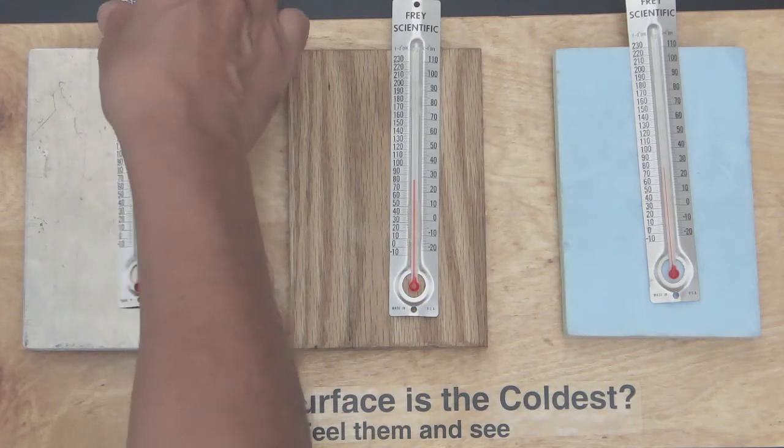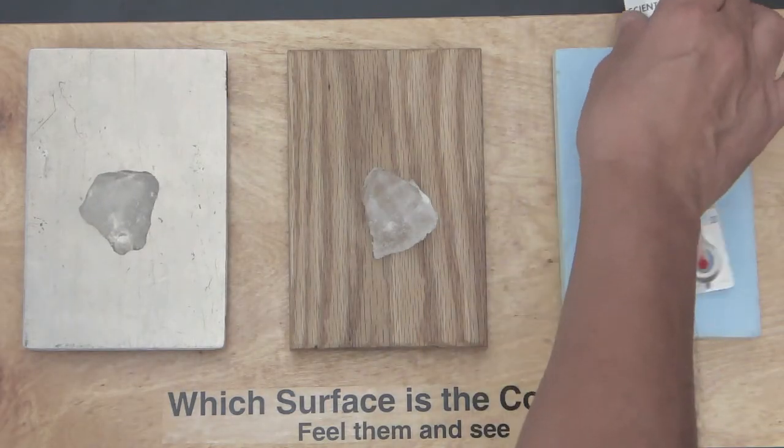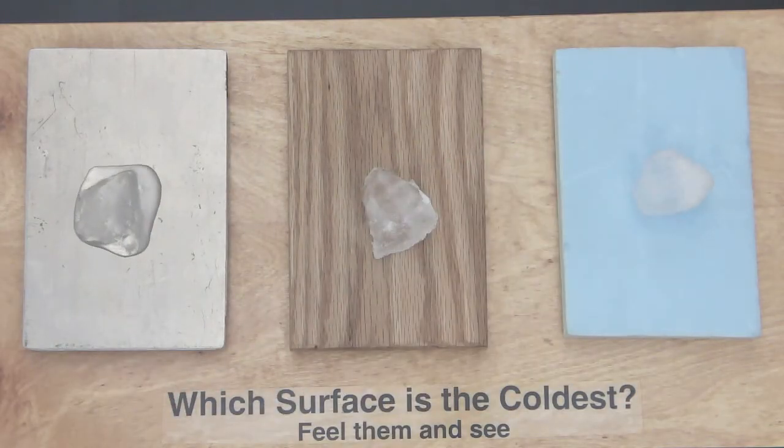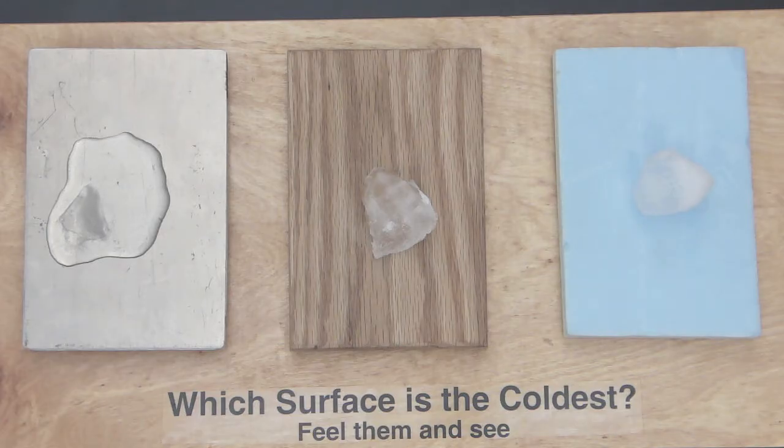The next step in this investigation is to place a small piece of ice on each of the blocks and observe what happens. Now we're going to speed up the results by a factor of four, so we're going to take 60 seconds worth of time and compress it down into 15 seconds.